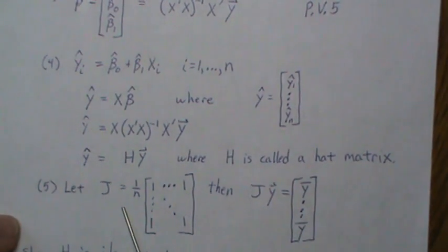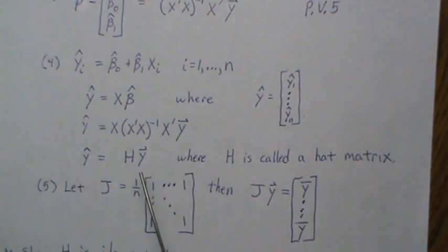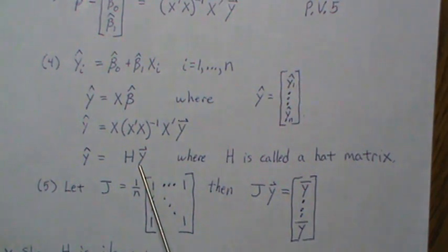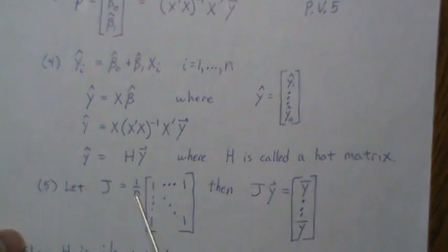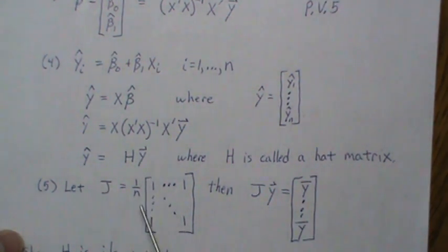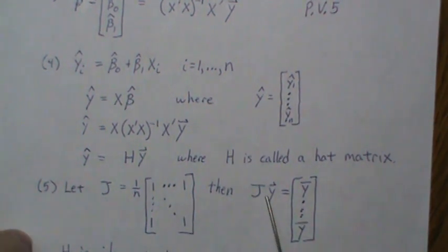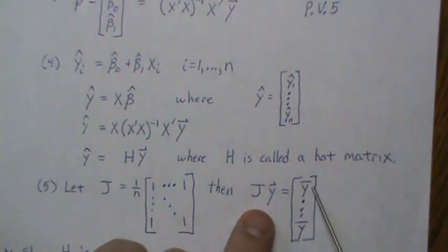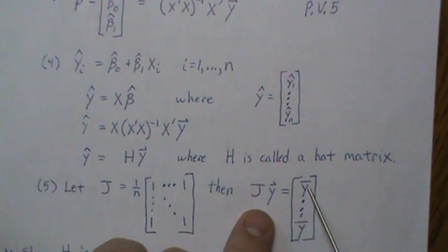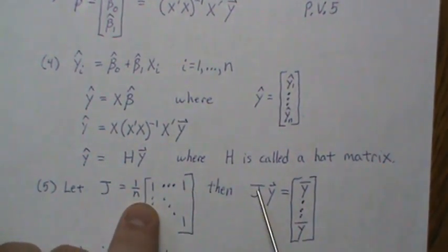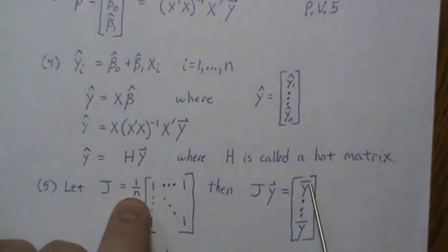There's one other matrix we want to talk about: J. Over the next page and a half we'll talk about properties of H and J, then go into the main result of writing the sums of squares in matrix notation. J is an n×n matrix of all ones multiplied by 1/n — it's symmetric and every element is 1/n. When you multiply J by y, every element in the resulting vector is the sum of the y's divided by n, giving a constant vector of y-bar.